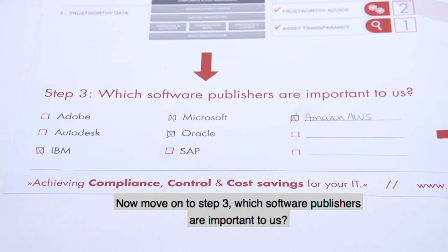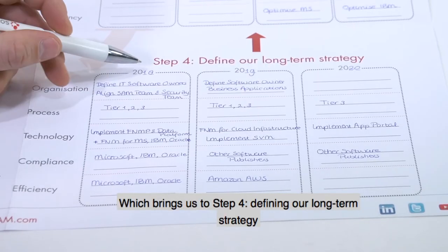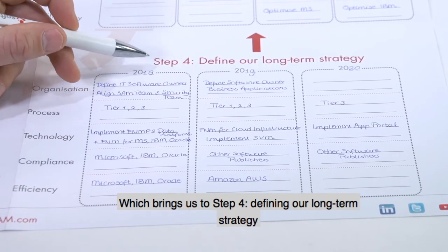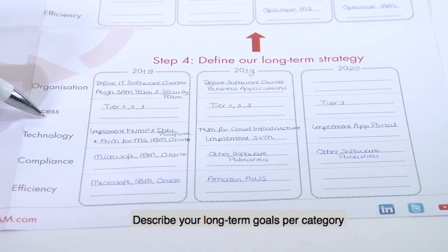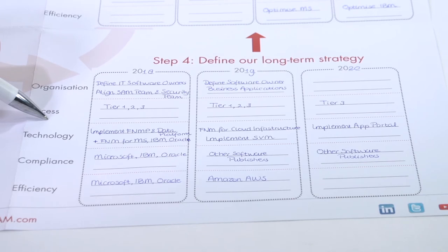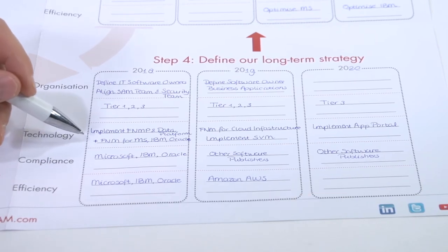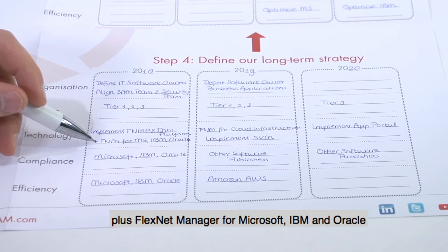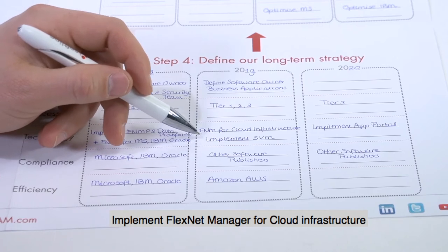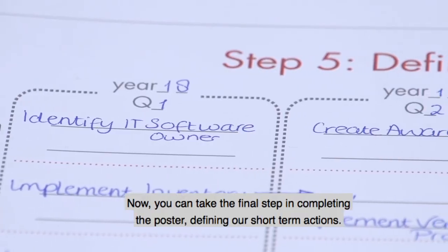Now move on to Step 3: which software publishers are important to us? Which brings us to Step 4: defining our long-term strategy. How would this look when you only use Flexera products? If we zoom in on the technology part, this reads: implement Flexnet Manager Platform and Data Platform Plus, Flexnet Manager for Microsoft, IBM, and Oracle, implement Flexnet Manager for Cloud Infrastructure, implement Software Vulnerability Manager, and implement App Portal.